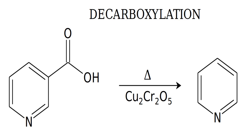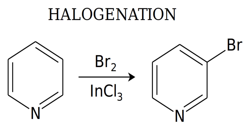The synthesis begins with decarboxylation of niacin into pyridine. This is done by refluxing niacin for about an hour, with copper chromite as a catalyst. Then we perform halogenation of pyridine by means of bromine, with indium chloride as a catalyst. This reaction is optimally carried out at a temperature of around 100 degrees Celsius.